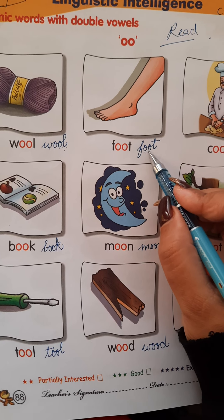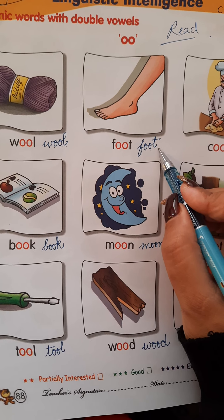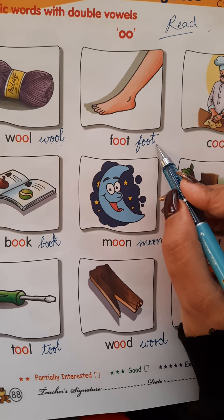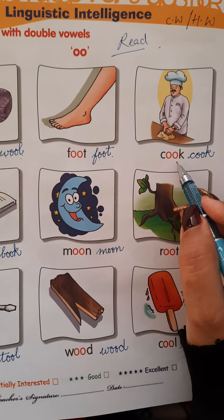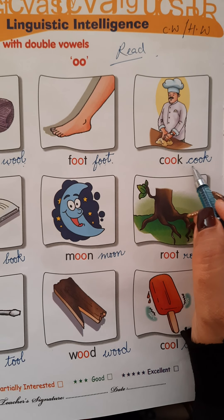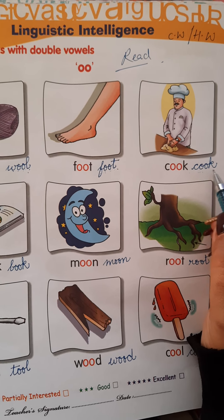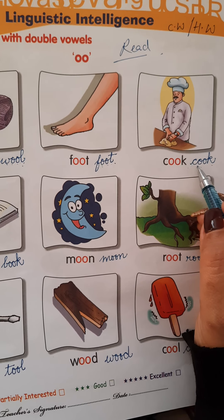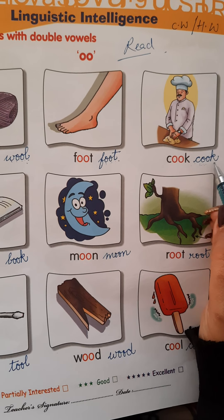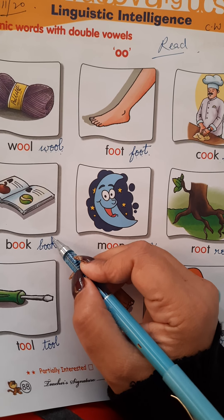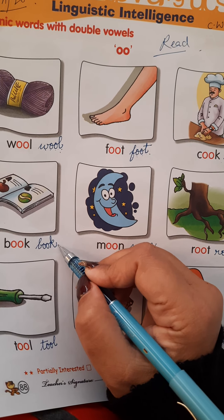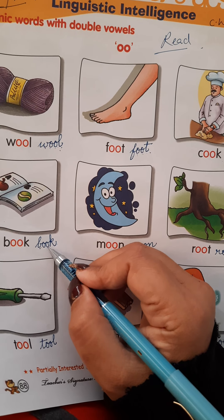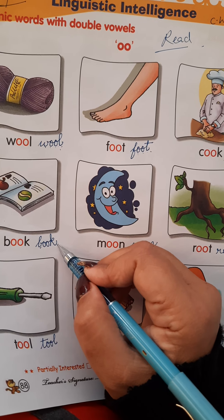F, double O, T — foot. F, double O, T — foot. C, double O, K — cook. C, double O, K — cook. B, double O, K — book. B, double O, K — book.